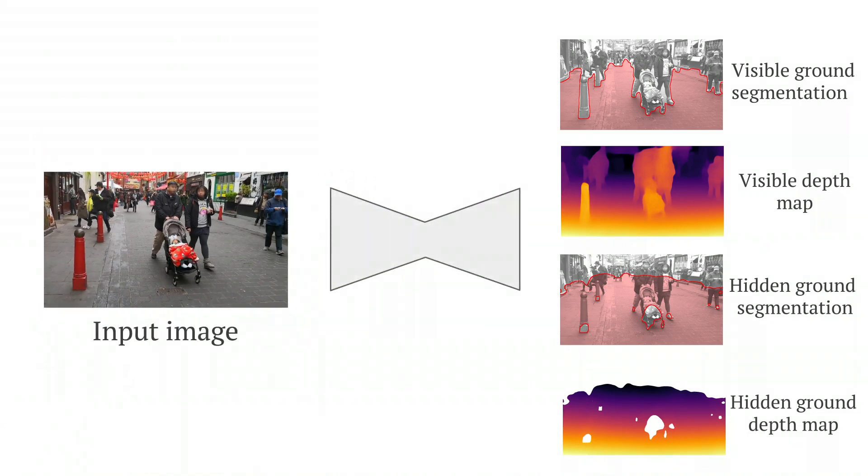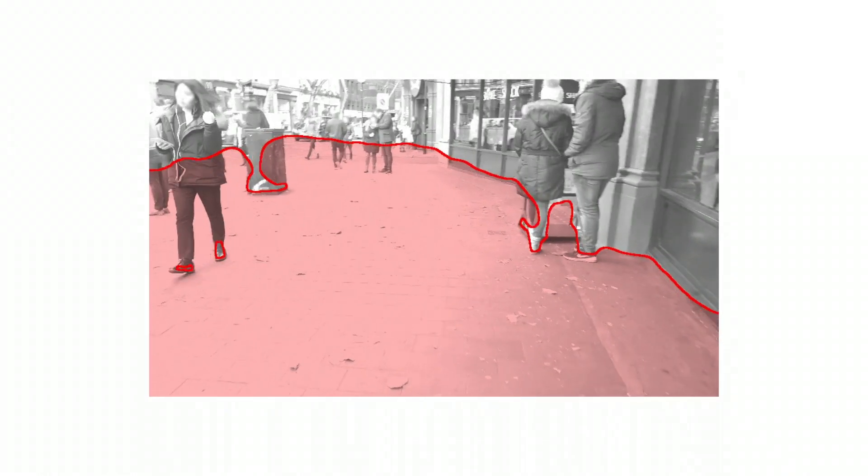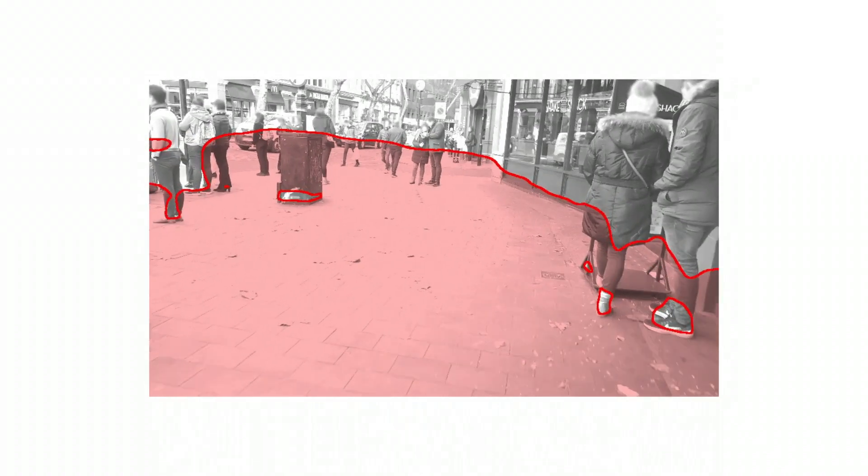Our image to image model predicts these four channels from a single color image as input. Our model can produce plausible estimates of traversable ground, even in cluttered scenes.